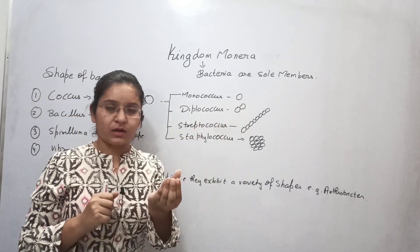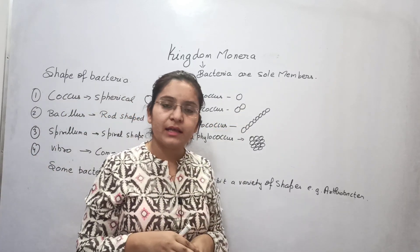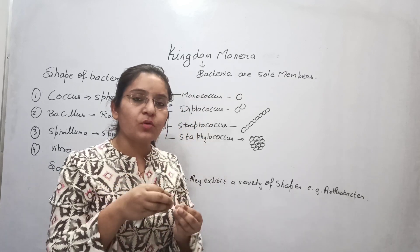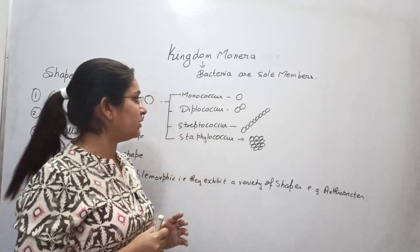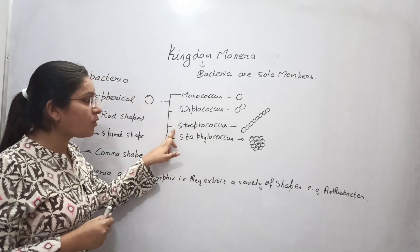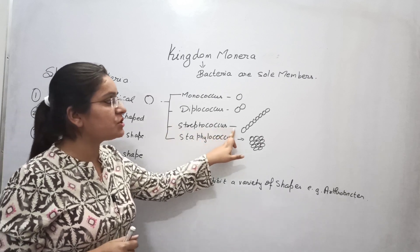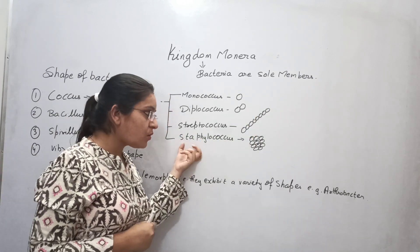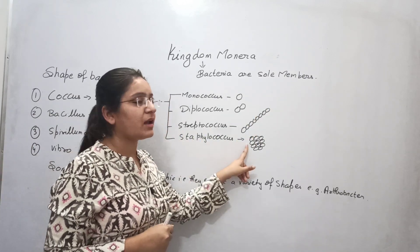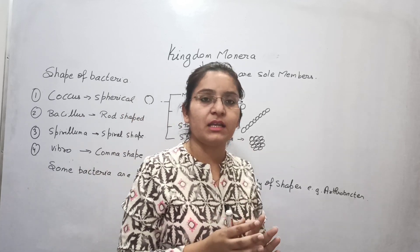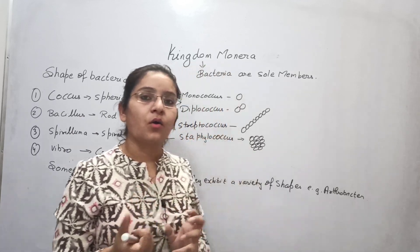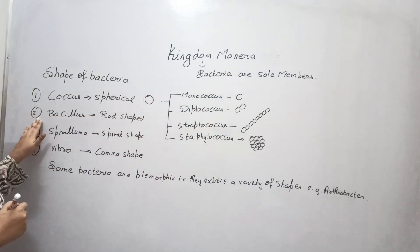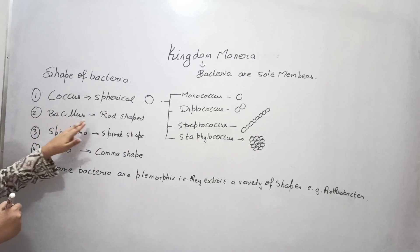In diplococcus, one coccus bacterium divides in the same plane and the two bacteria stick together. Streptococcus is a chain of coccus bacteria. Staphylococcus means a bunch of bacteria with a coccus shape.